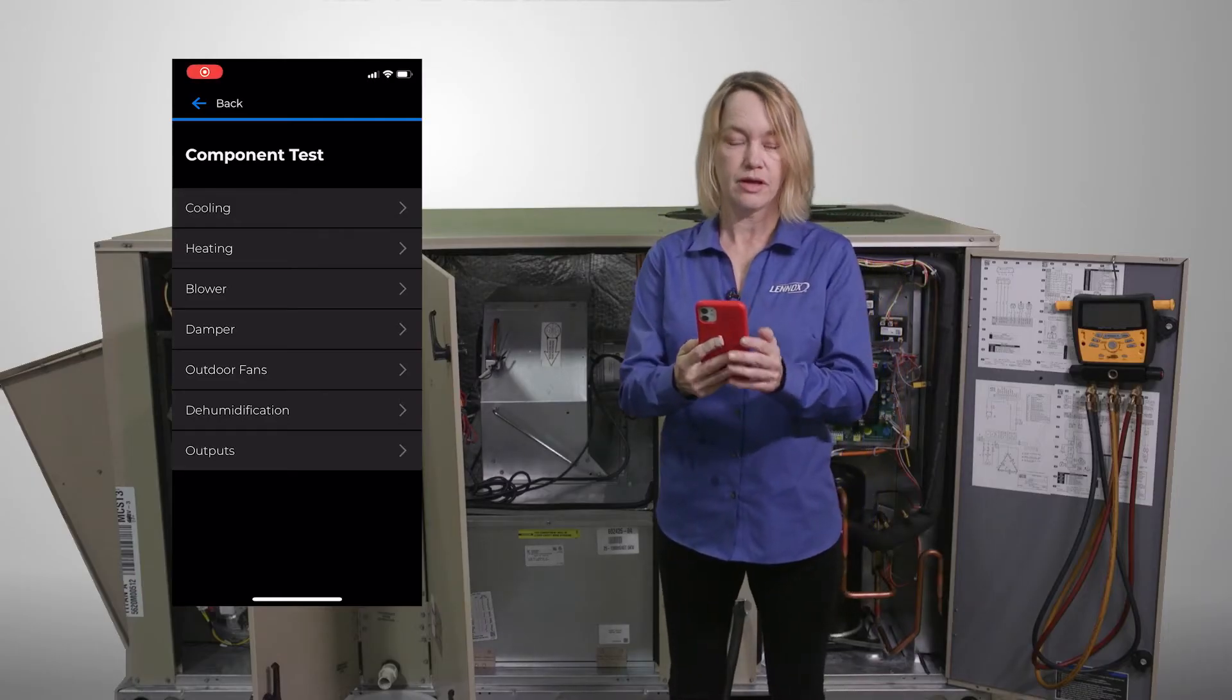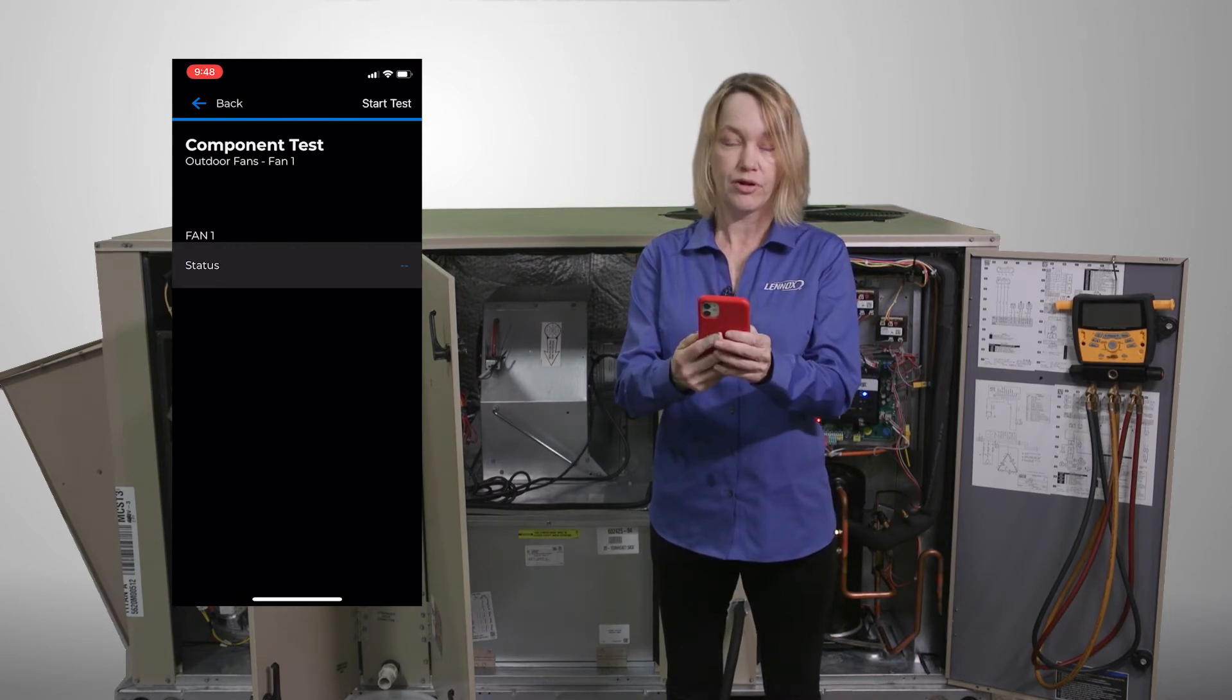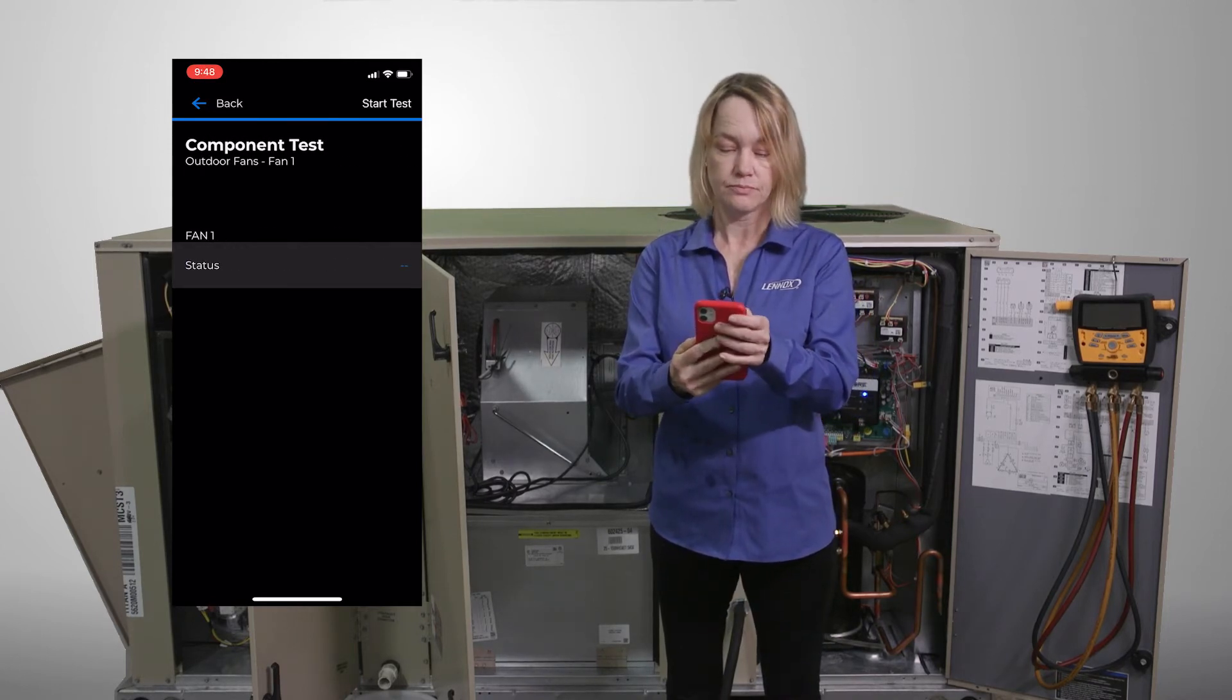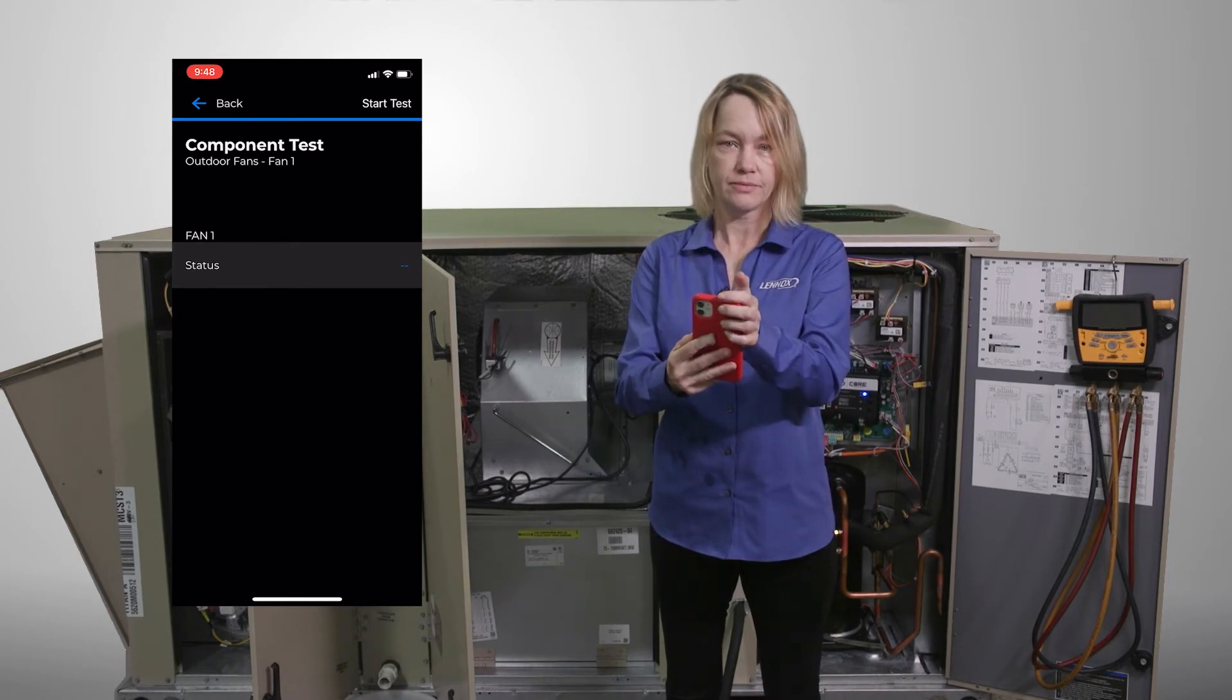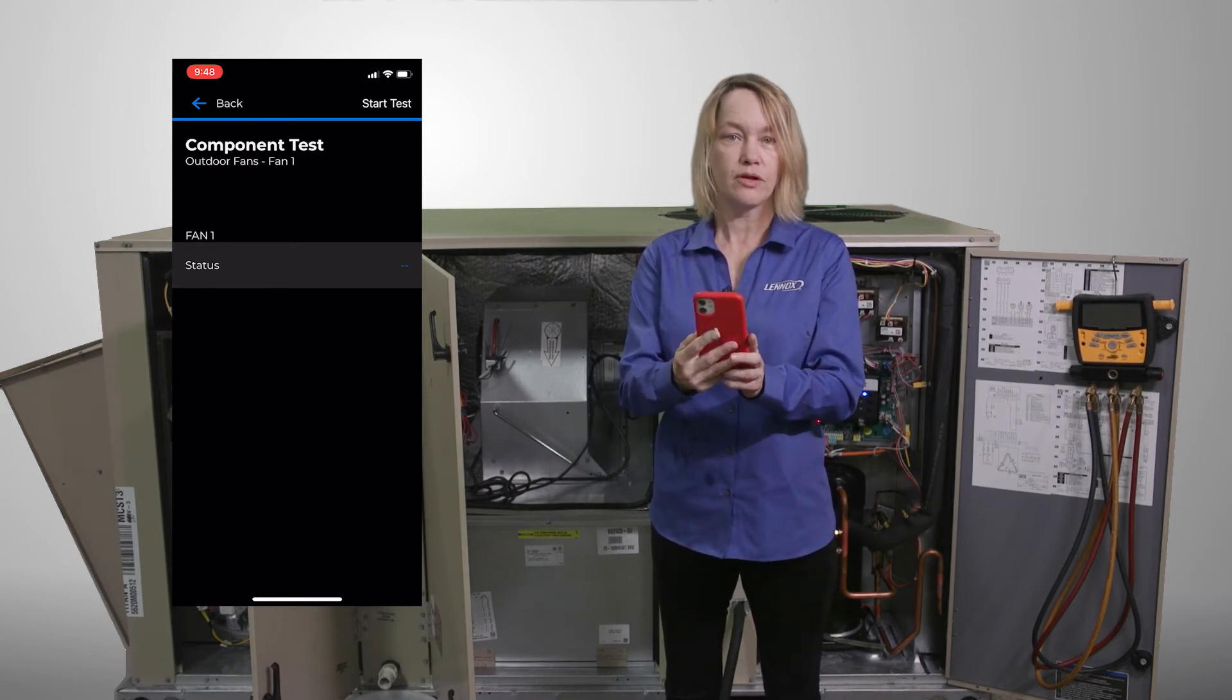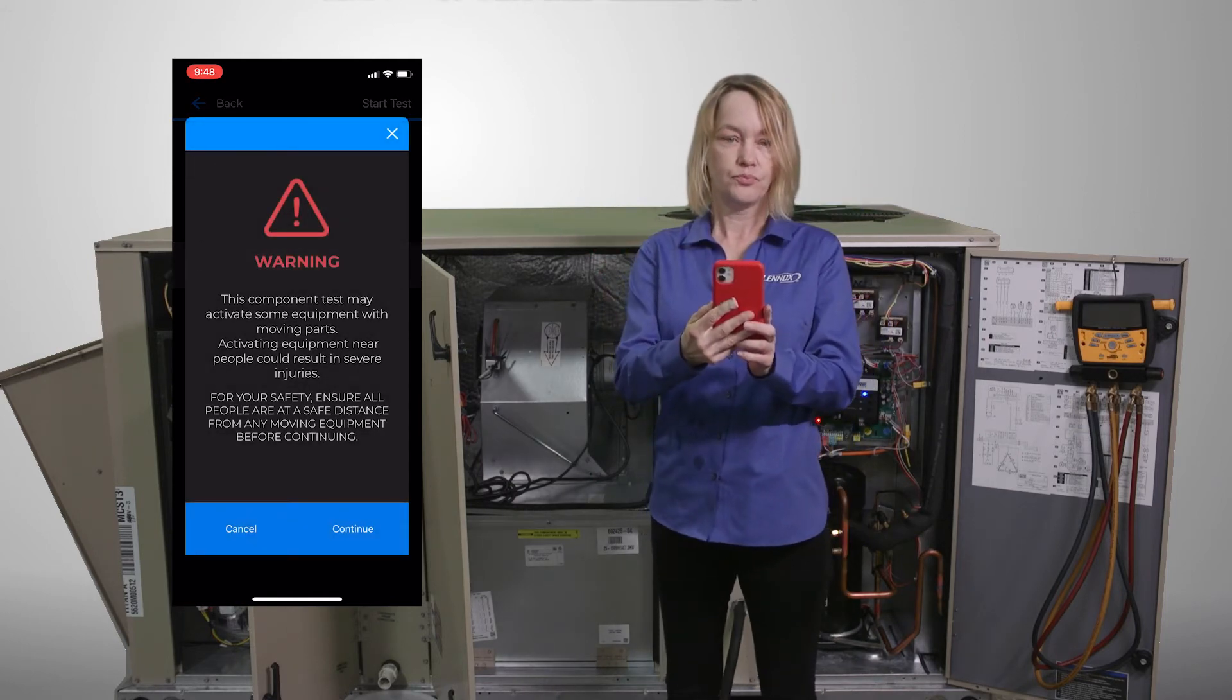The next test we're going to do is the outdoor unit fans. This unit has one fan. Press outdoor fans. Press fan 1. Press start test. Confirm that no one's in the way of the fans. Press continue.